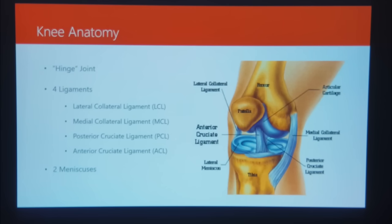Because the lateral collateral ligament is on the lateral portion of the knee, it prevents lateral displacement — it prevents that knee from bowing outward. On the opposite side we have the medial collateral ligament. The lateral prevents lateral motion, and the medial prevents the knee from caving in or traveling medially.